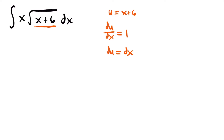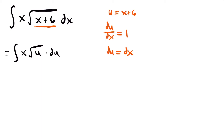Now the goal for u-substitution is that whatever du is equal to, that needs to be found within your integral so that du can replace it. What we're trying to do is rewrite this integral entirely in terms of u so that we have a simpler integral we know how to integrate. However, if we replace dx with du and replace x plus 6 with u, we're still going to have this x on the outside that we haven't rewritten in terms of u. We would have the integral of x times the square root of u times du — and this integral is not entirely in terms of u because of that x outside the square root, so we cannot integrate it just yet.